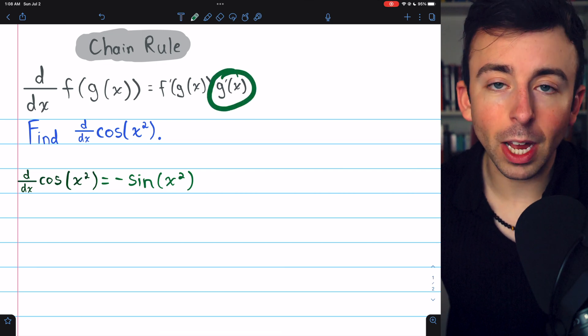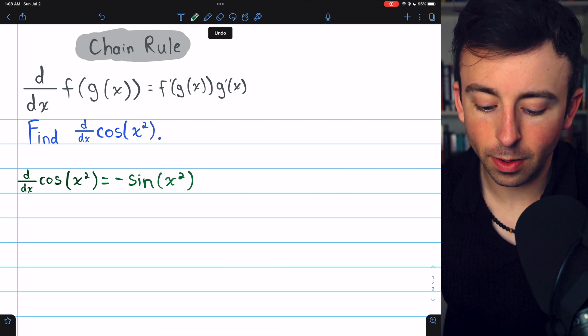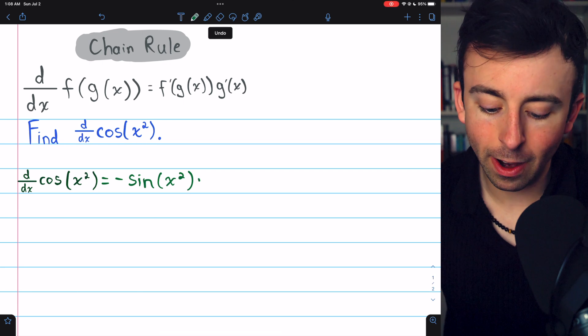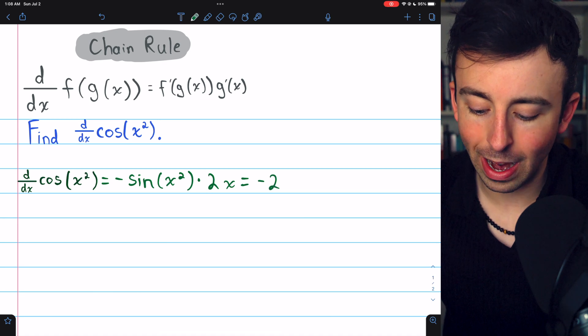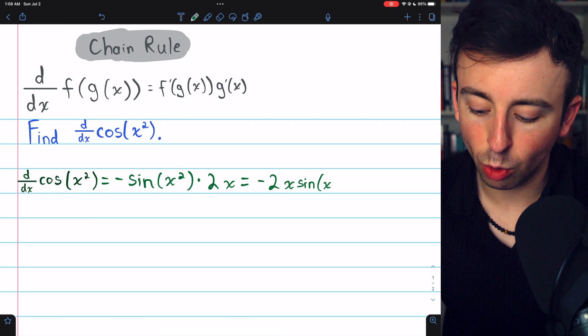Then we multiply by g prime, the derivative of the inside function. The inside function is x squared, and its derivative is 2x. Thus, we find that the derivative of cosine of x squared is negative 2x sine of x squared.